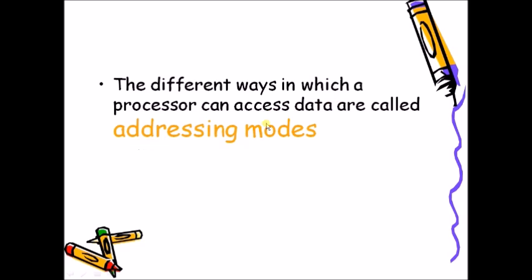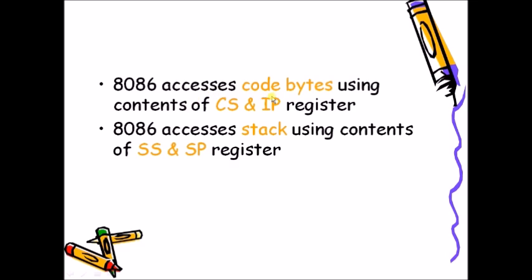The different ways in which a processor can access data are called addressing modes. The operand can be stored in a register, in memory, or in an input/output port, or accessed directly via an instruction. Now, 8086 accesses code bytes using the contents of the CS and IP registers — adding CS and IP gives the physical address where the instructions are present.